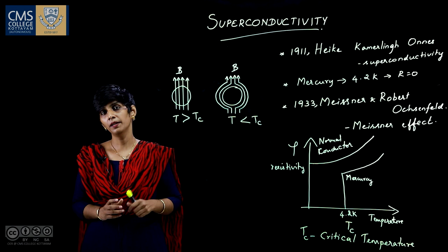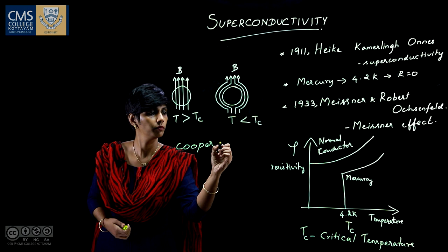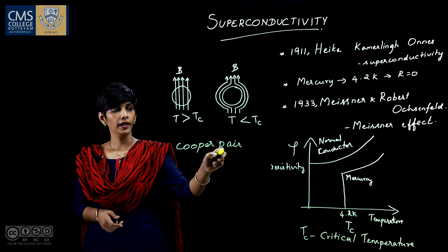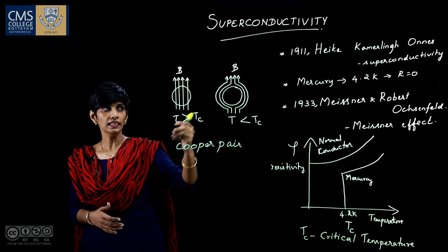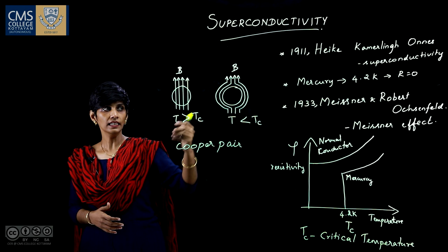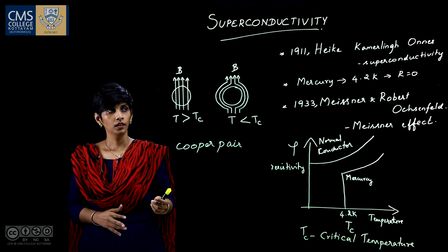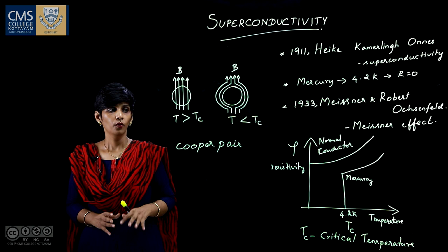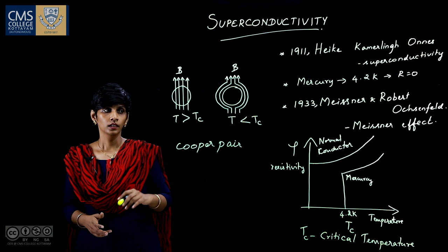According to this theory, the electrons in the superconductor are grouped in pairs called Cooper pairs. The motion of these Cooper pairs in the superconductor are correlated, and they function as a system working together as a single entity. When an electric field is applied, these Cooper pairs start moving and constitute a current.